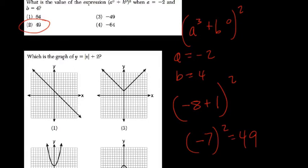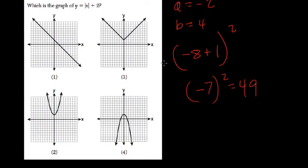Which is the graph of the absolute value of x plus 2? Well, here we can recognize it immediately as choice 3. The absolute value function looks like this v-shape.